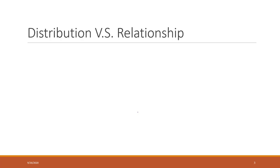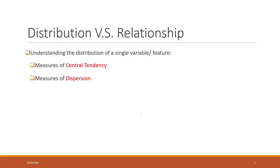First, let's review classical statistics. Descriptive classical statistics can help us understand the data — like non-spatial data and information. The first concept is distribution versus relationship. To understand the distribution of a single variable, we normally use the measure of central tendency and also measure of dispersion.